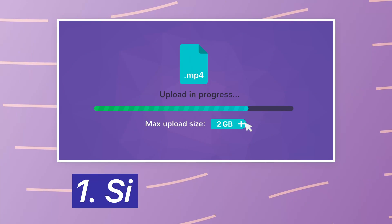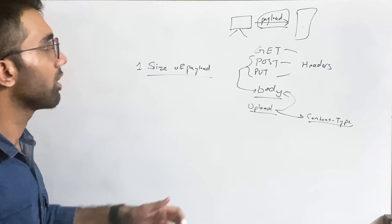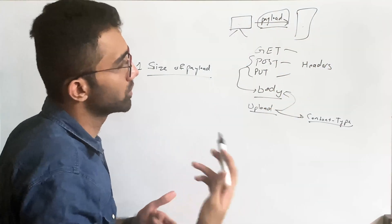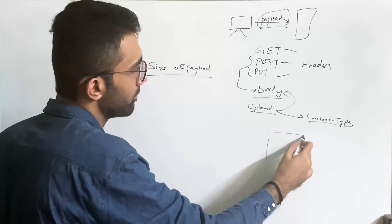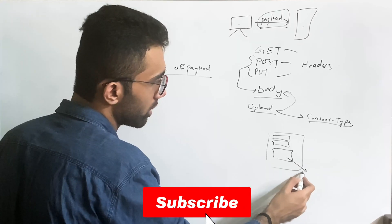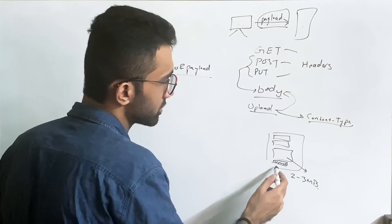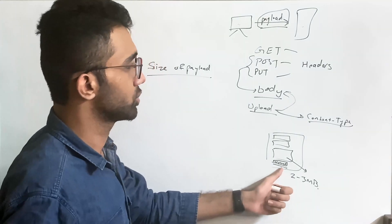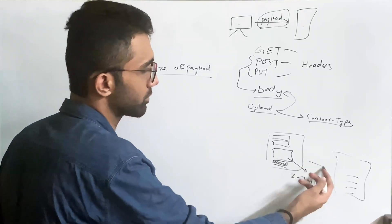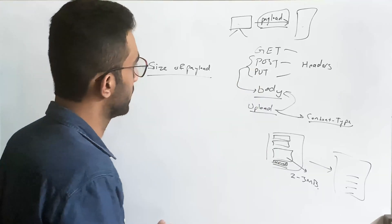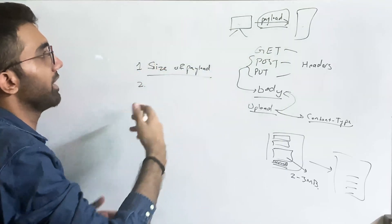The first security tip is to always check the size of the payload you receive. Ideally this is configured on the reverse proxy or managed service. Restrict it to a sane limit — for example, a contact form file upload should be no more than 2-3 MB. If you don't, someone can crash your server by uploading a 50 GB file, and your server goes boom.